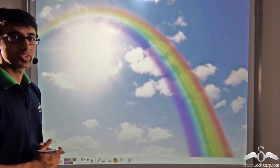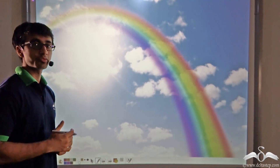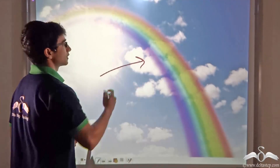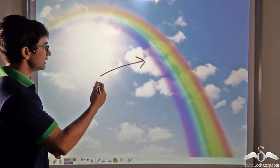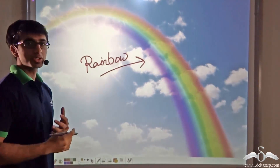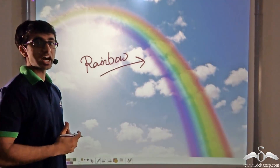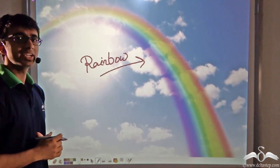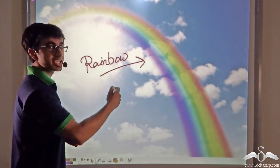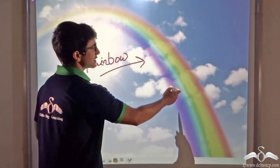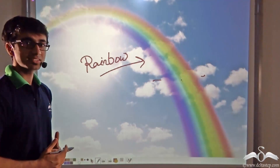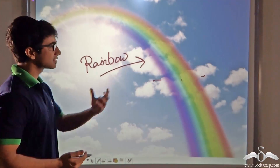If you look up into the sky on a sunny day after a rainfall, you will notice a structure known as a rainbow. Generally, you are able to see a rainbow when the sun shines after it has rained. Now we have studied that the sun gives us white light, yet in the rainbow you can see multiple colors — red, violet, green, and many others. So if the sun is giving us only white light, where are these colors coming from?